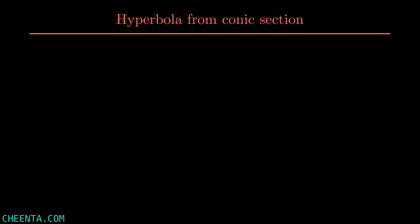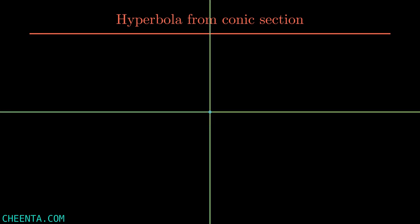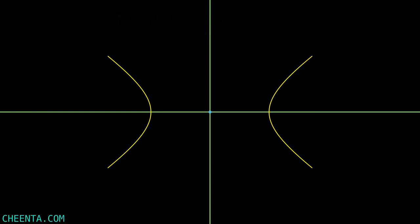You probably know what a hyperbola is, but first we will define it using a particular definition. For the definition we will use a simple construction. We have taken the axis, and now we will draw the hyperbola. We will take two very specific points that are very important for any conic section — especially for the hyperbola — those are the two foci of the hyperbola. To define the hyperbola we will take a point on the hyperbola and join the two foci with it.